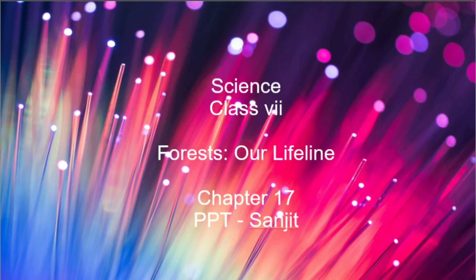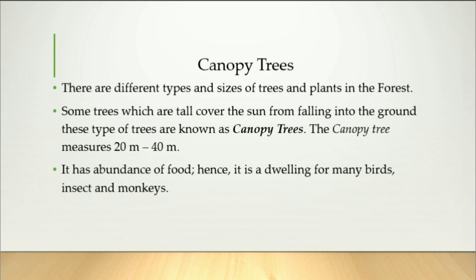Hello guys, Sanjit here. Welcome back to Science and Social Hub. Today we are going to see forest — Chapter 17: Canopy Trees. There are different types and sizes of trees and plants in the forest. Some trees are tall and cover the sun from falling into the ground. These types of trees are known as canopy trees.